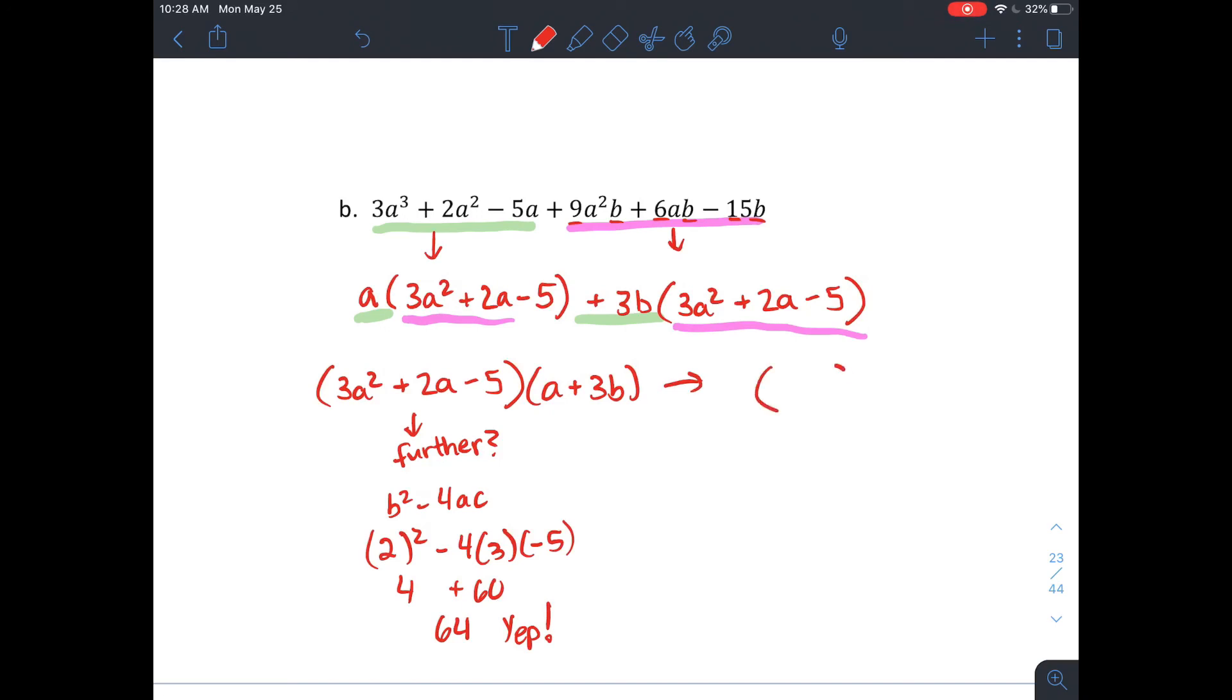So you can either find the two numbers that multiply to negative 15, add up to 2, and factor by grouping, or you can guess and check it. I'm going to guess and check it. So 3a times a would be 3a squared to get negative 5. I'm going to try my positive 5 there and my negative 1 there. I factored a lot, so I'm really good at guessing and checking. And then, yeah, that works.